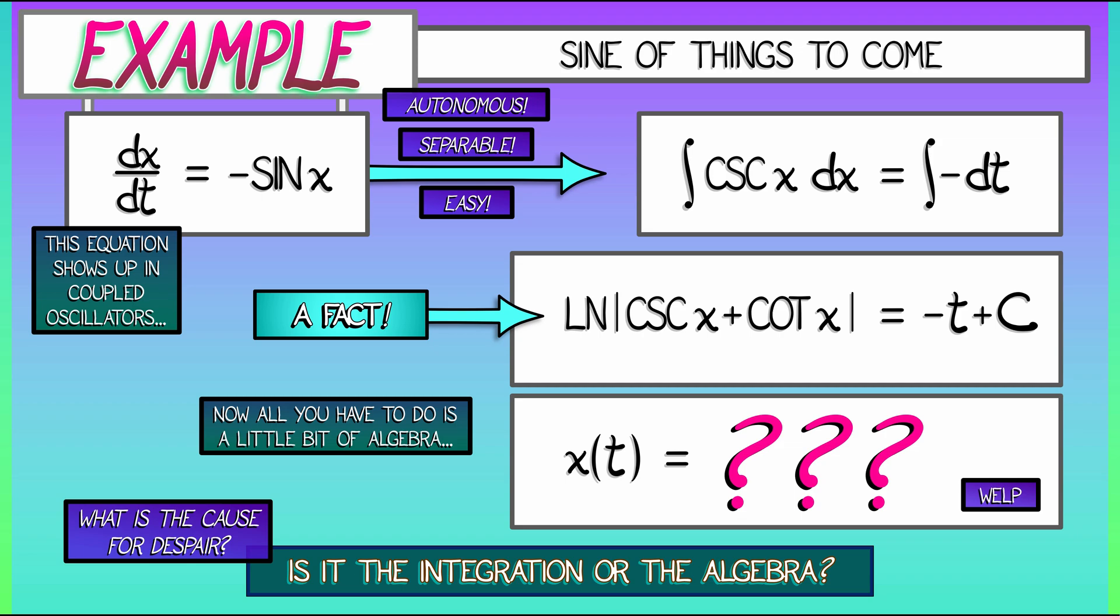We can separate it, no problem there. But then you got to integrate cosecant. That's hard. But let's assume that we know the answer. We're still not done because there's a lot of algebra left to solve for x as a function of t. The thing that we want, we can't get. So both the integration and the algebra make life difficult for nonlinear ODEs. So what are we going to do?